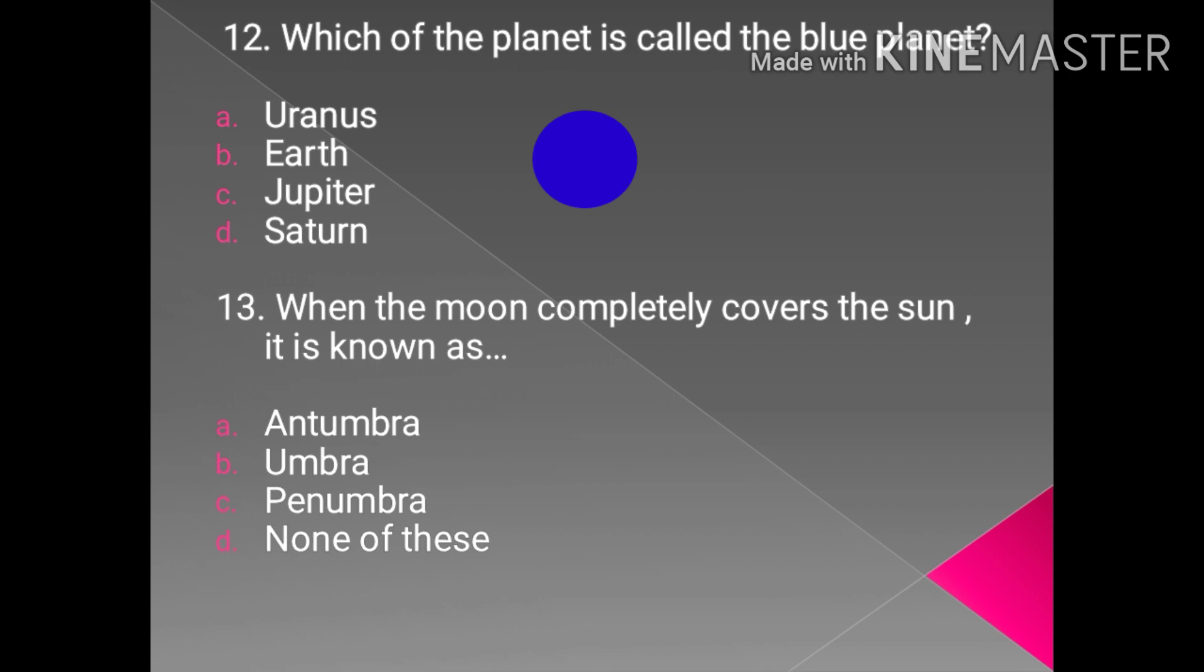Earth is known as the blue planet because it has a large number of oceans in it. And due to the presence of large number of water bodies, it appears to be blue from the universe. Therefore it is known as blue planet.